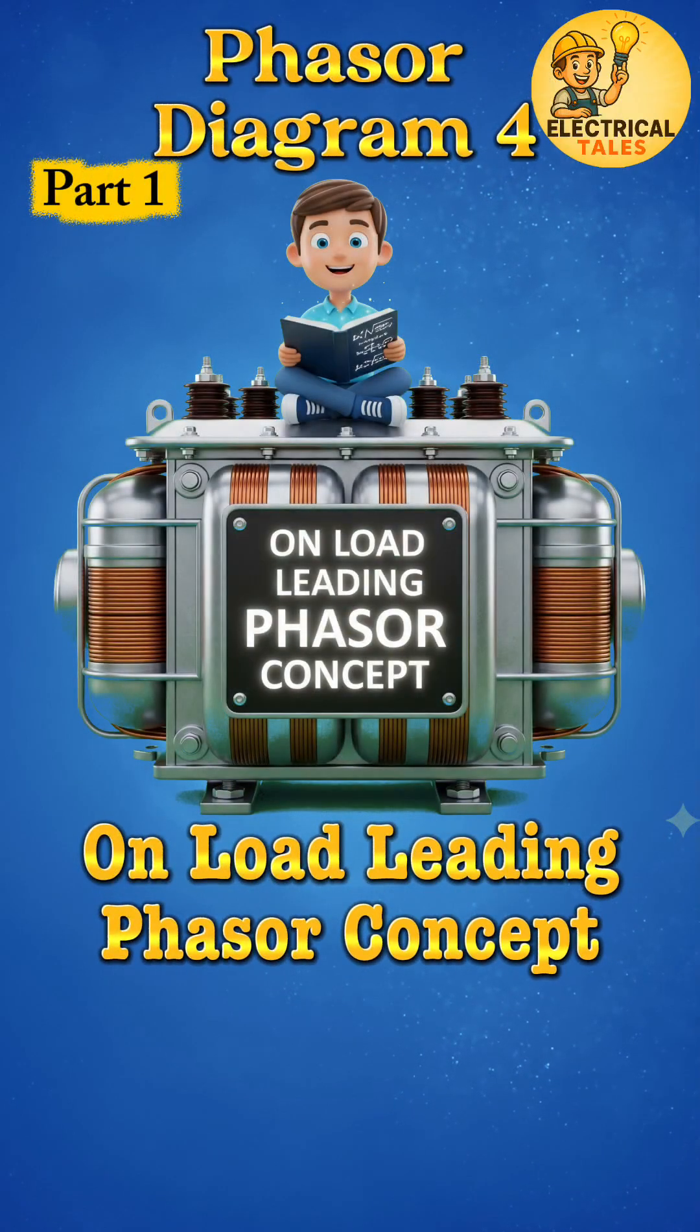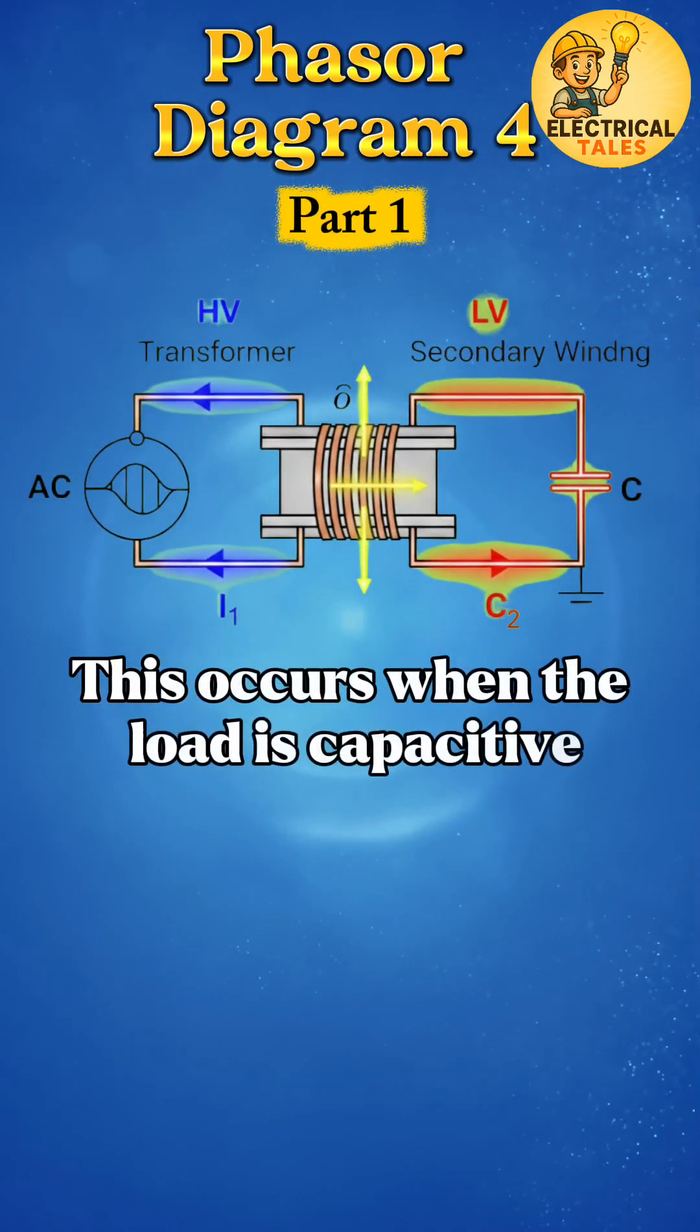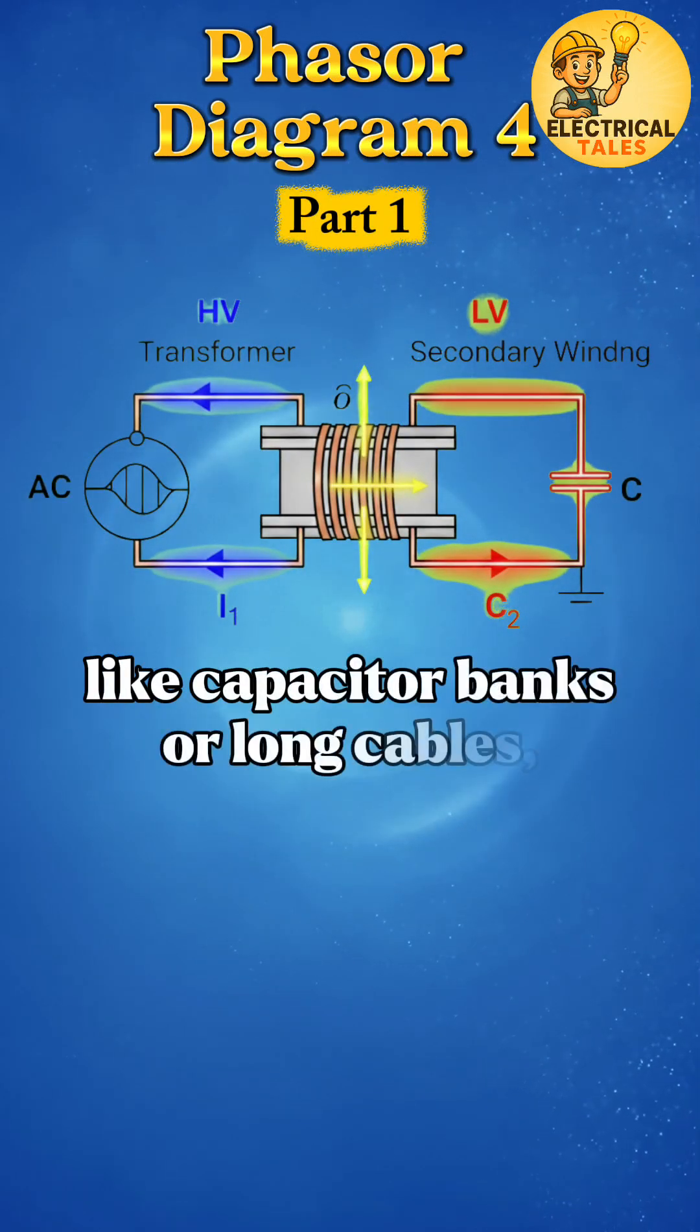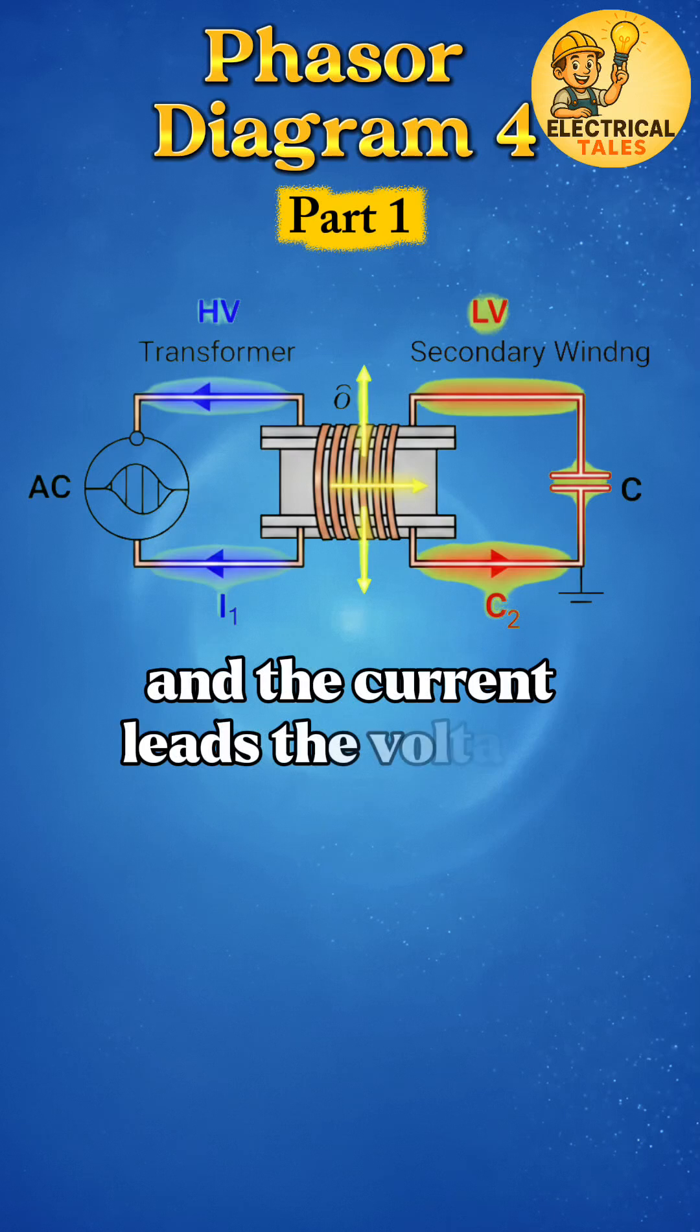Welcome back friends, today let's explore the leading power factor condition of a transformer. This occurs when the load is capacitive, like capacitor banks or long cables, and the current leads the voltage.